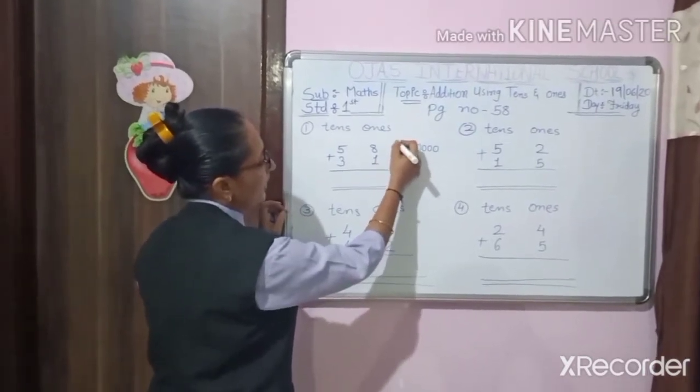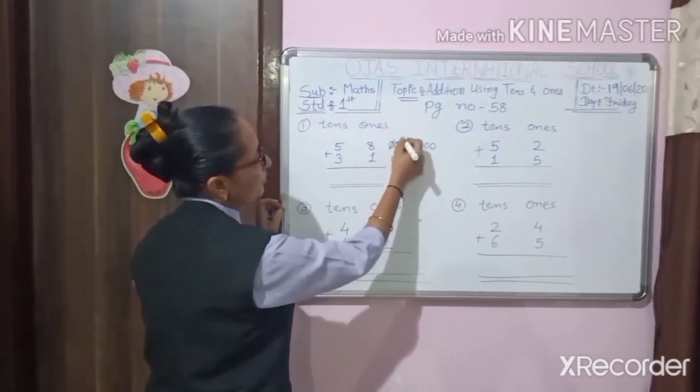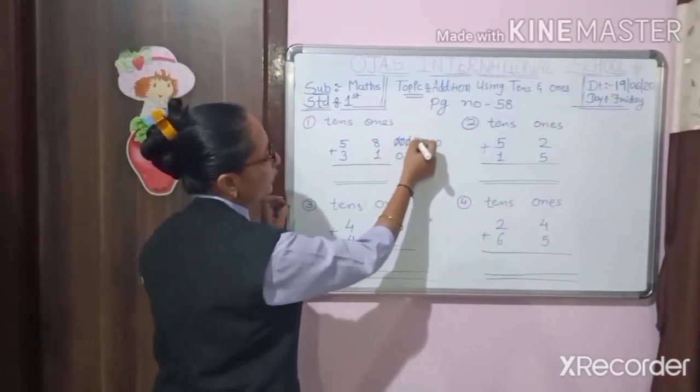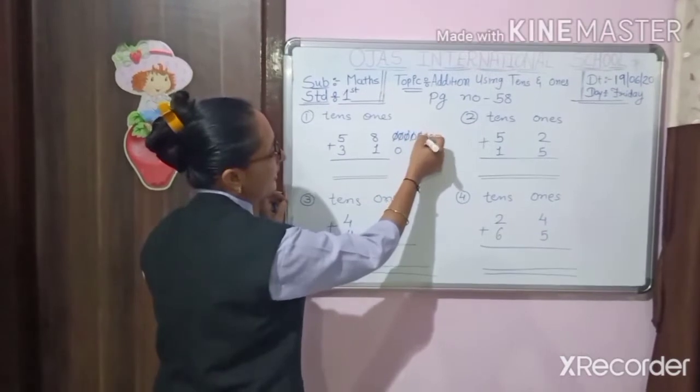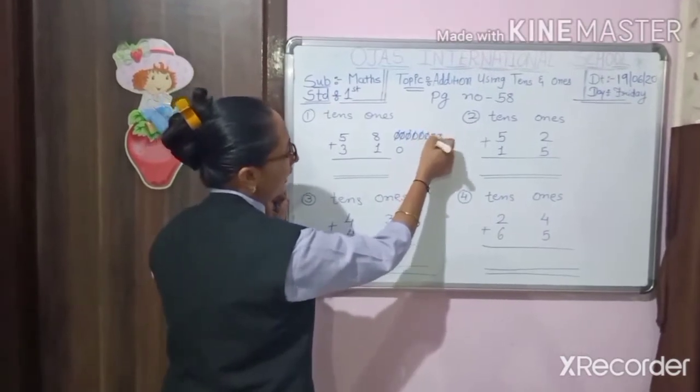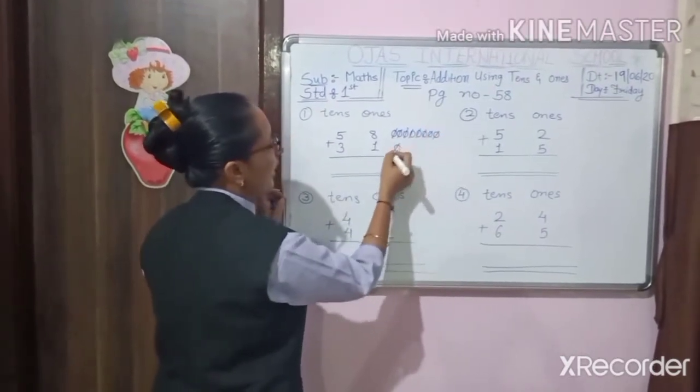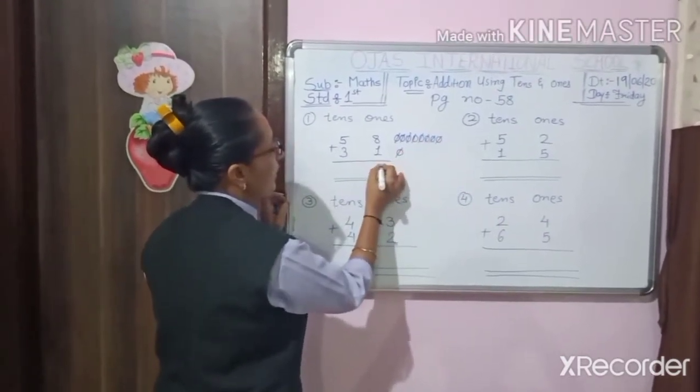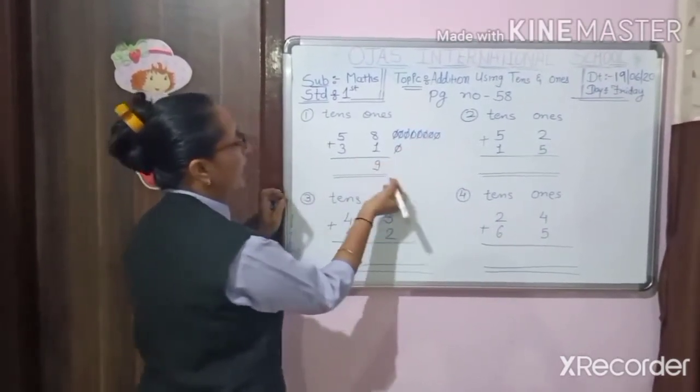So count together: 1, 2, 3, 4, 5, 6, 7, 8, 9. So you have to write here 9.